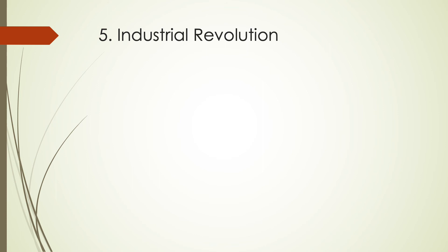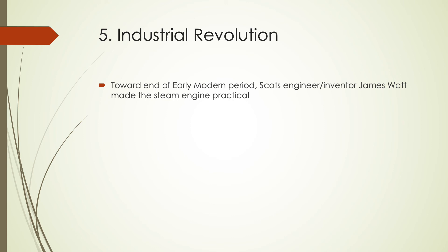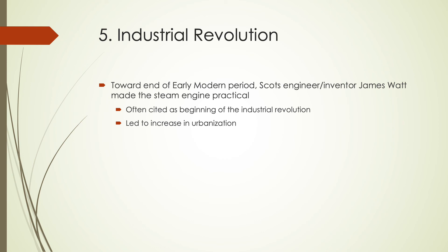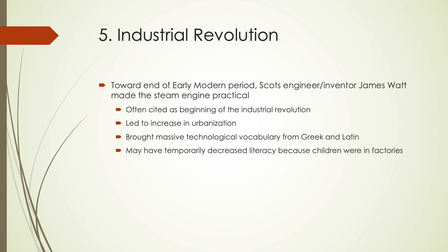During the Industrial Revolution, which also took place during this time — towards the end of the early modern period — we see a lot of technical advances taking place. James Watt made the steam engine practical, and this is often cited as the beginning of the Industrial Revolution. This led to a further increase in urbanization and brought about a lot of additional vocabulary — we start seeing the introduction of technical and technological vocabulary from Greek and from Latin. This actually may have temporarily decreased literacy rates because children were in factories and weren't accessing education at the same rate.